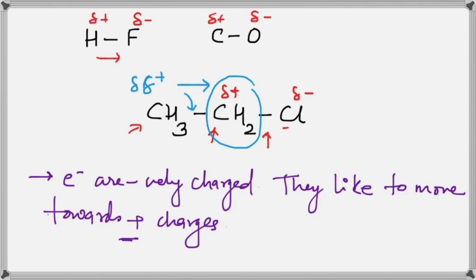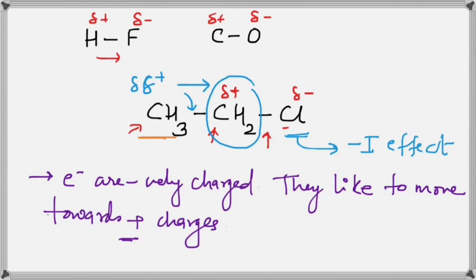If we look carefully, the chlorine atom withdrew electrons from the adjacent carbon — that effect is called the minus I effect. When you take out electrons from a group, you show minus I effect. What the CH3 group did was supply electrons to the carbon with positive charge — that is called the plus I effect. So: if you are supplying electrons, you show plus I effect; if you are taking out electrons, you show minus I effect.